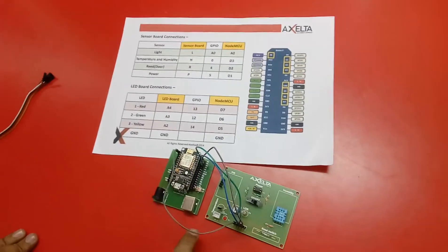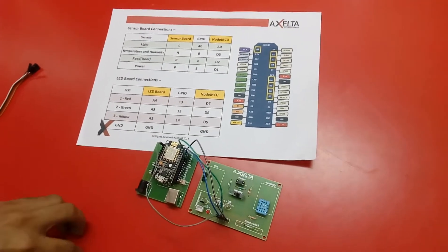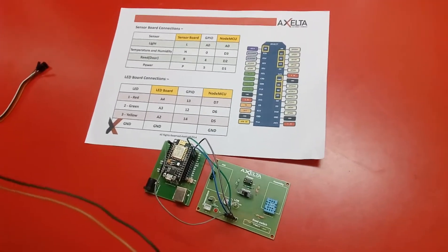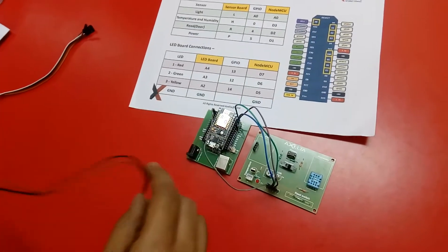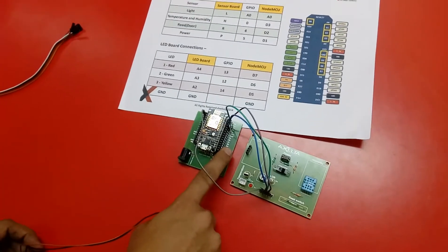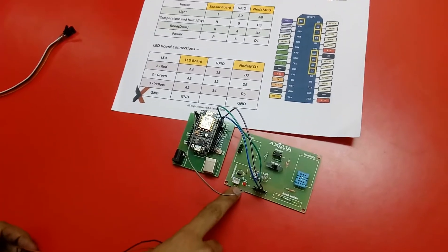After this connection we have to supply power to this sensor board. For that purpose we are using this 2 pin wire. One end of this wire we have to connect to this NodeMCU board and one end to sensor board.